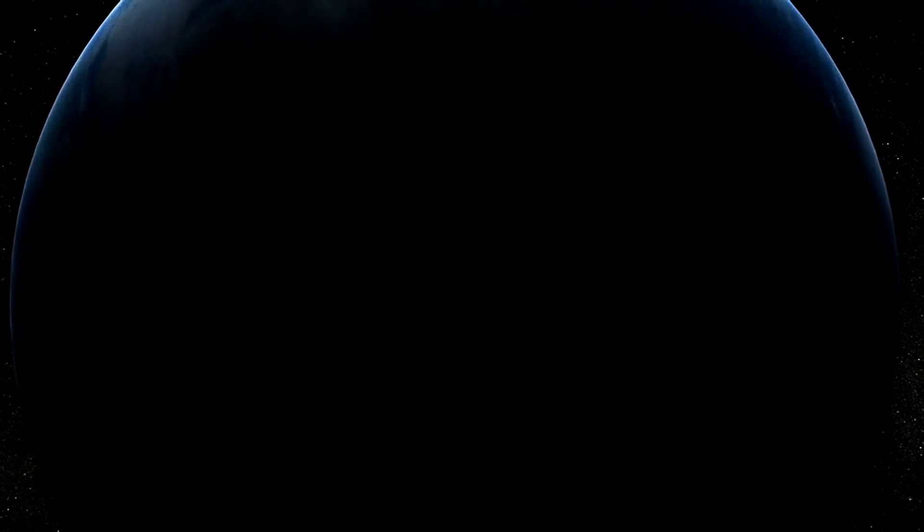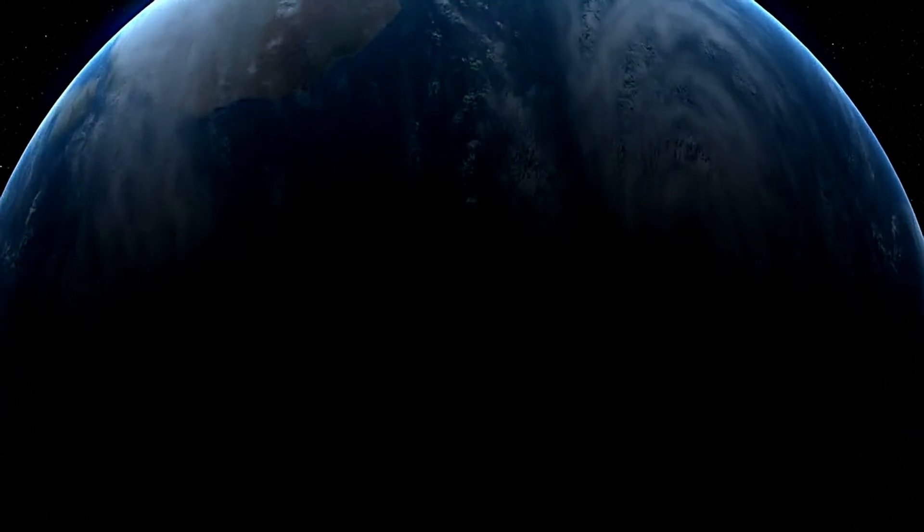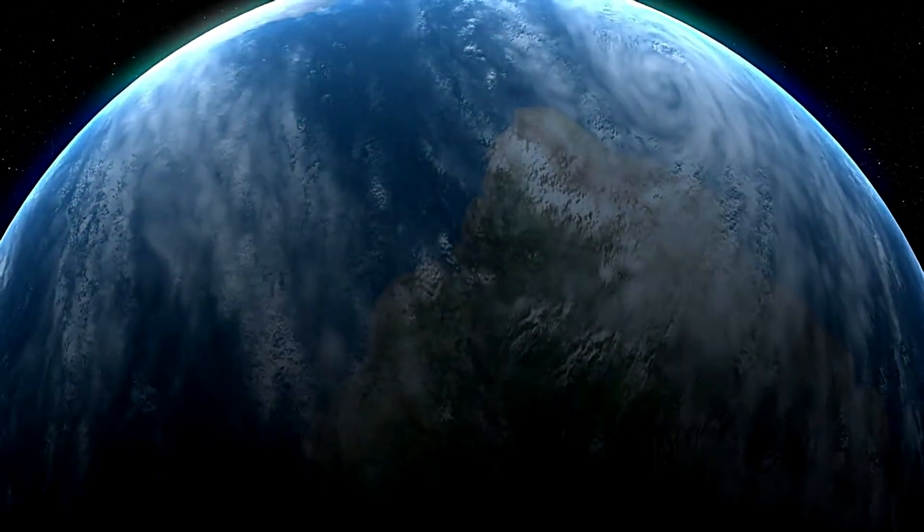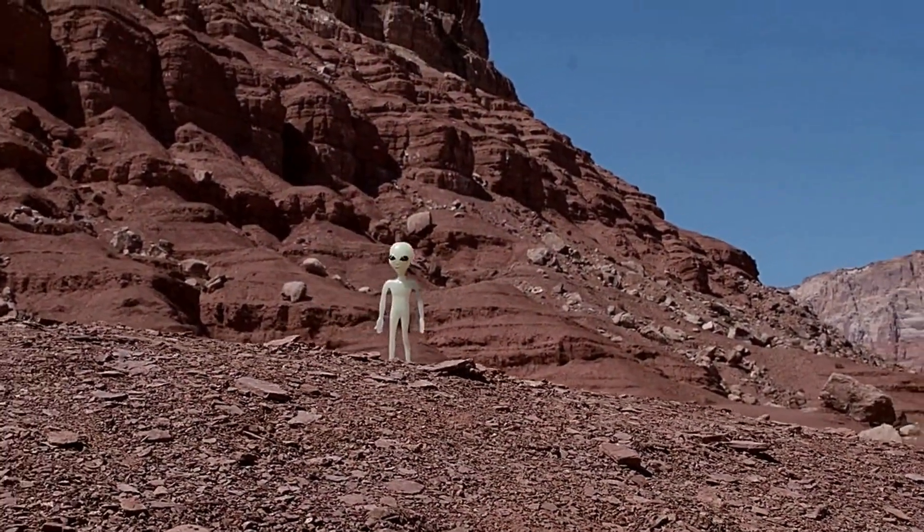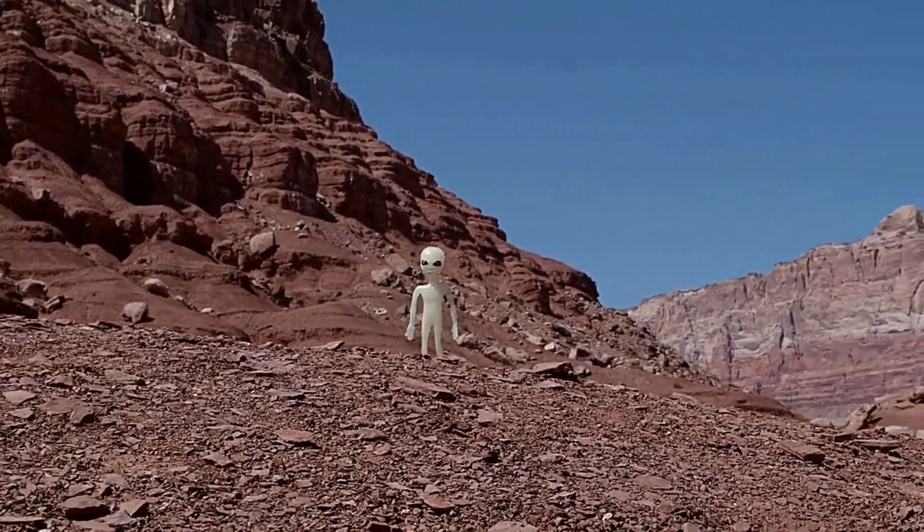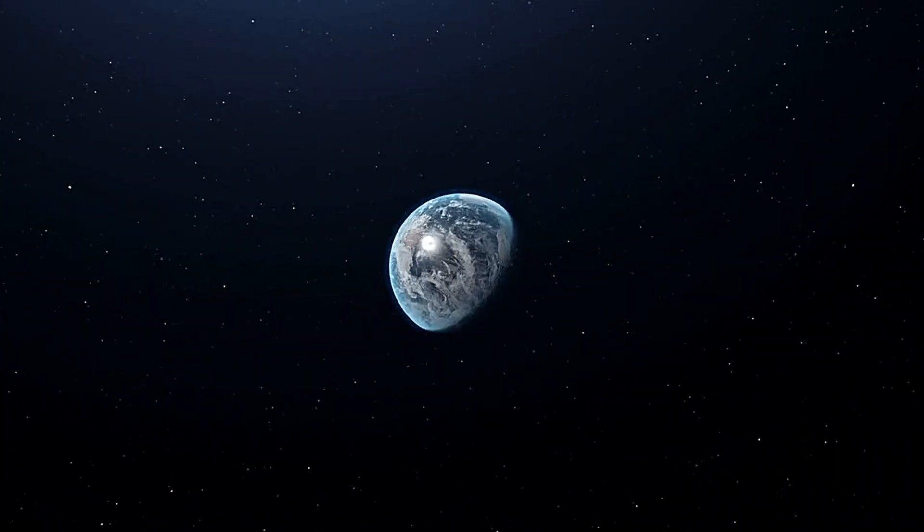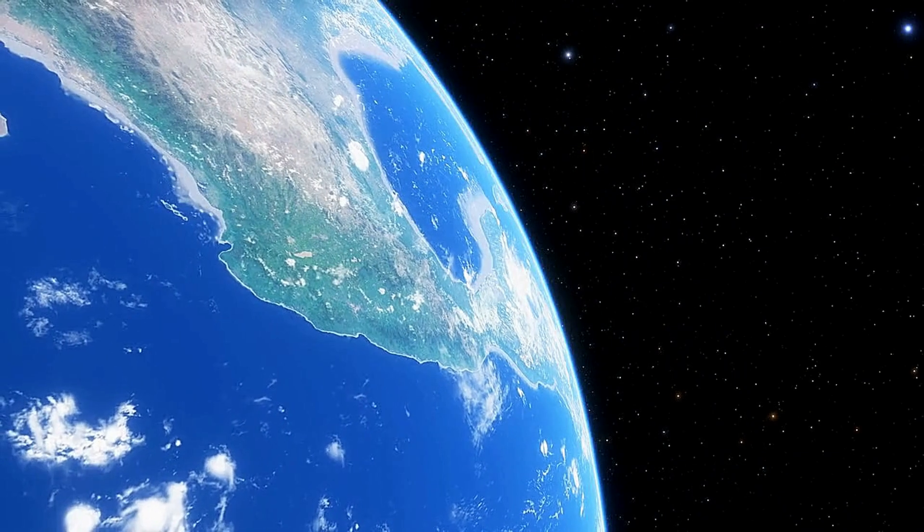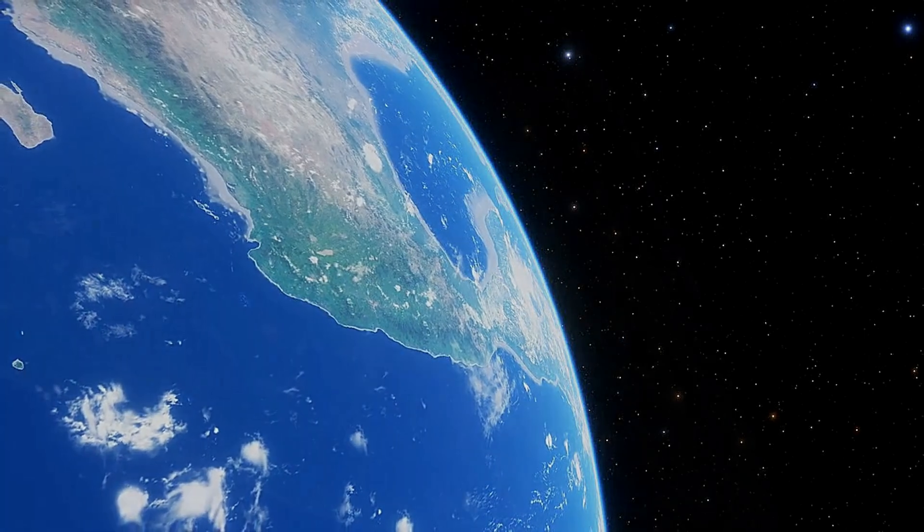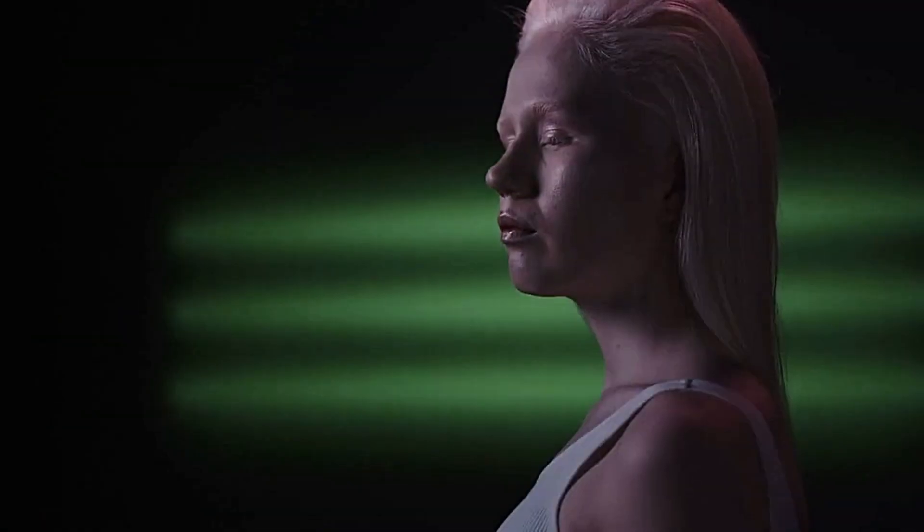They may believe that our primitive level of technology poses a threat to their own way of life, or they may simply want to study us like we study animals in a zoo. There are a number of reasons why aliens might choose to observe us from afar, but the most likely explanation is that they don't want to interfere with our development. By keeping us isolated, they can ensure that we evolve at our own pace and avoid any potential disasters that could be caused by contact with a more advanced civilization.